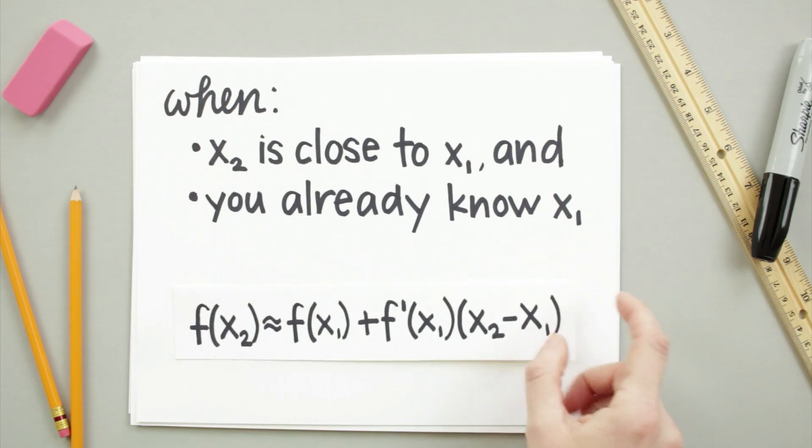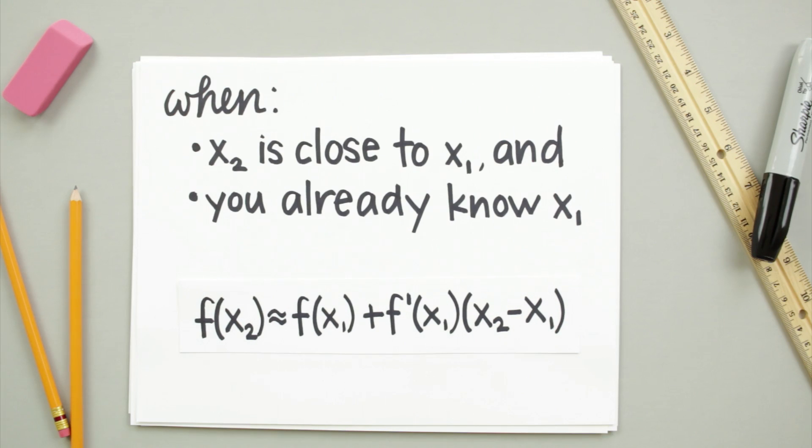You just plug the information you have into this linear approximation formula, which is really just a generalized version of what we used in the previous example. The linear approximation of f of x2 is equal to f of x1 plus the derivative of x1 multiplied by the difference between x2 and x1.